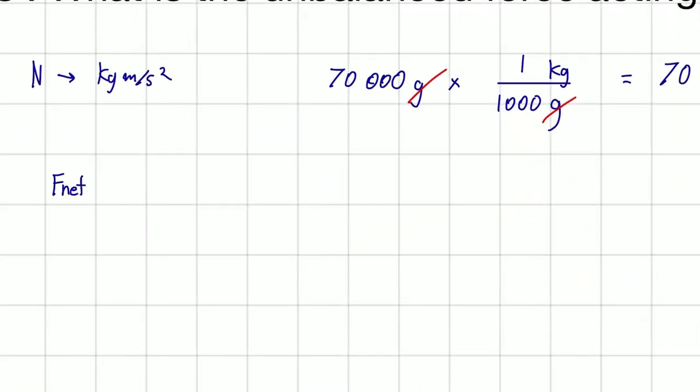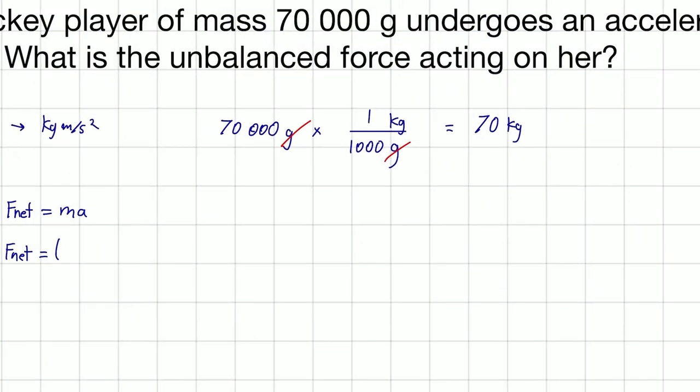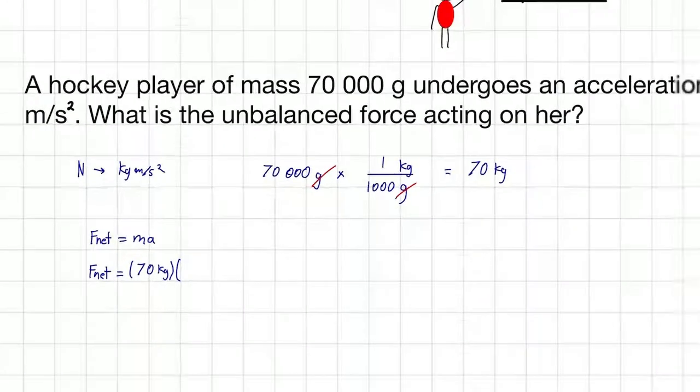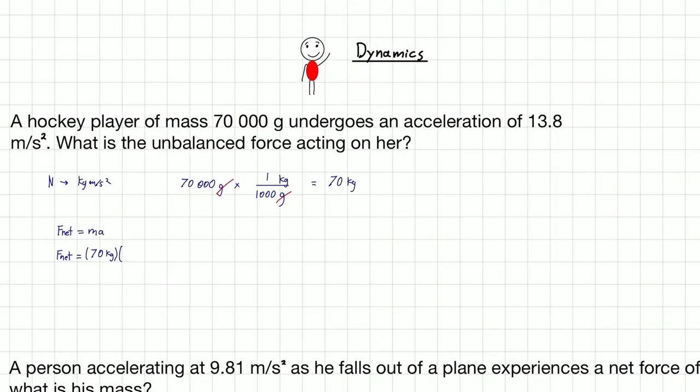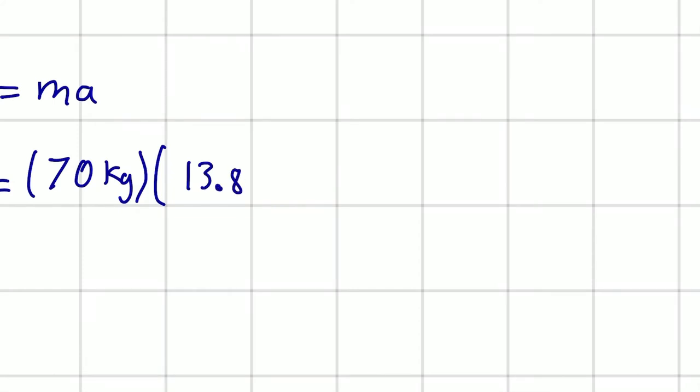Our formula, F net is equal to MA. So that means F net is equal to—and for M, we have 70 kilograms. And then the acceleration, we're given the acceleration in the question. That's 13.8 meters per second squared.